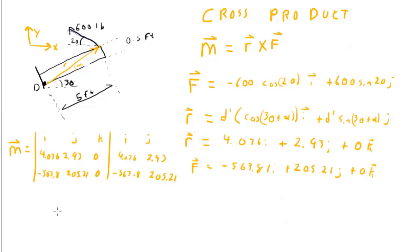K is this times this times this, that's 4076 times 205.21 times k, minus this times this times this, that's 2.93 times minus 567.8 k. And so what do I wind up with?